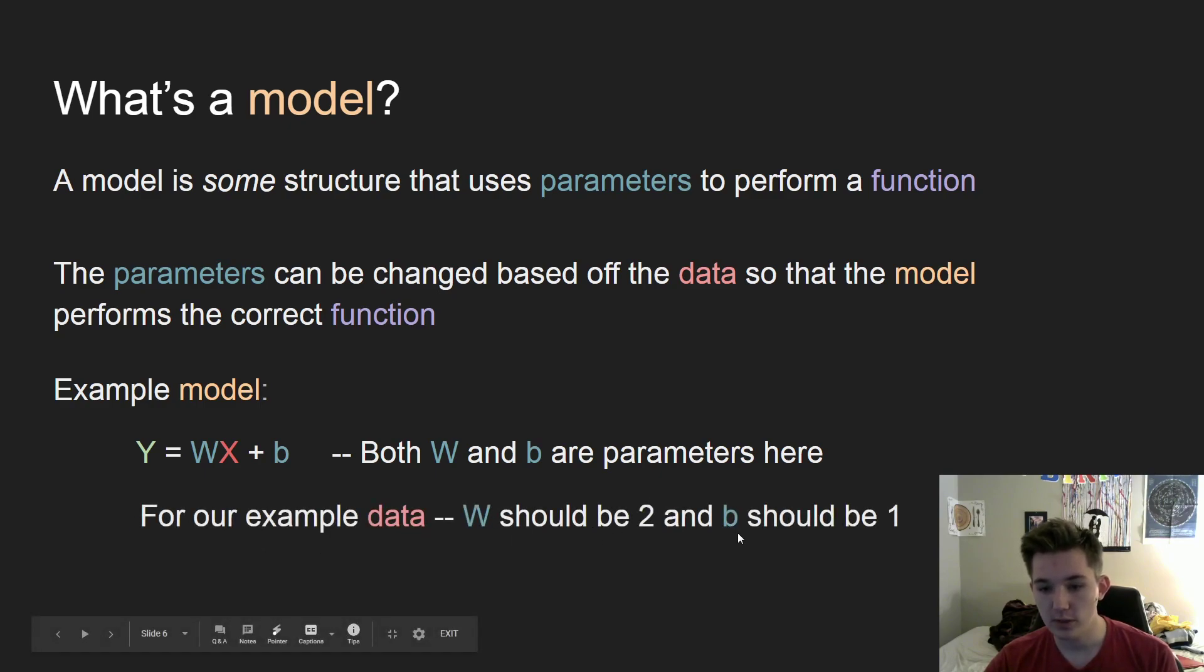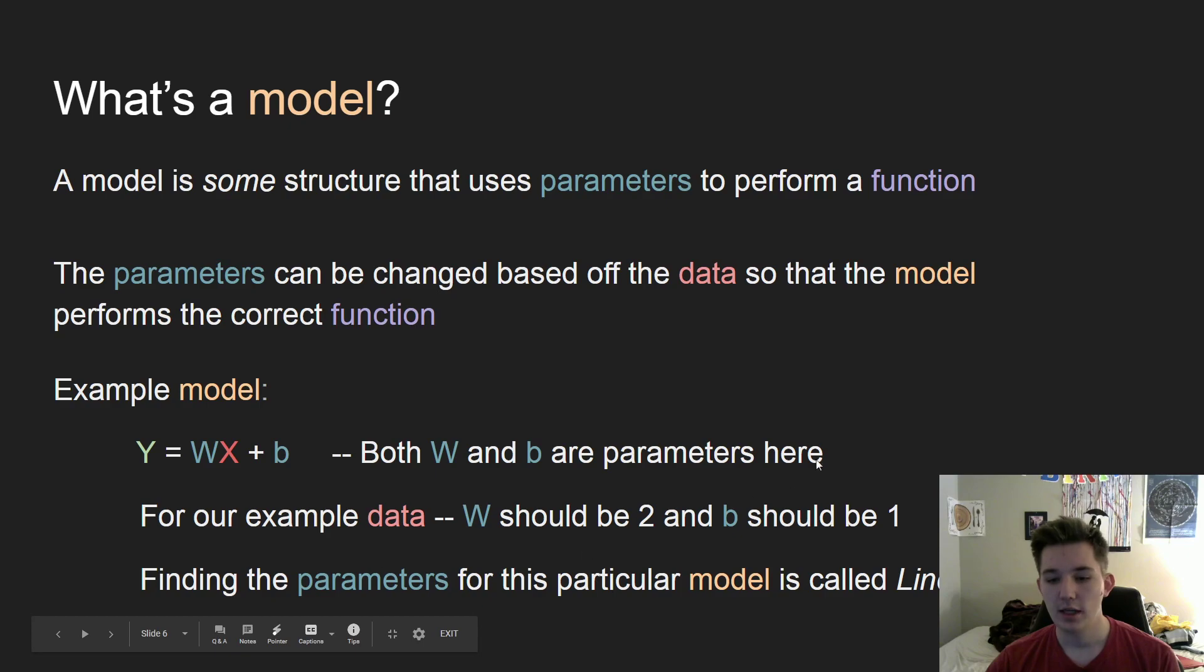And we're going to be using whatever method we choose to update these to make this function work correctly. So in our example, you know that w should be 2 and b should be 1 because our function is y equals 2x plus 1. So we have to find some way that we can actually find these values and put them into this model correctly so that we get our output.